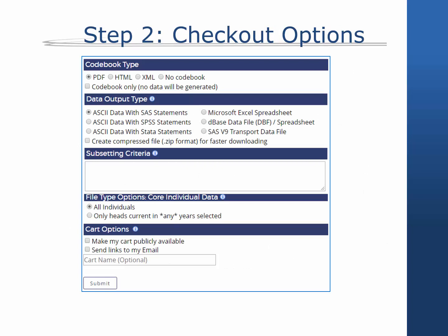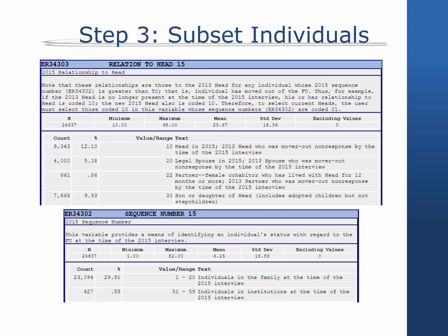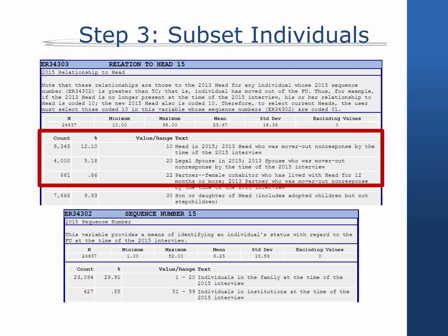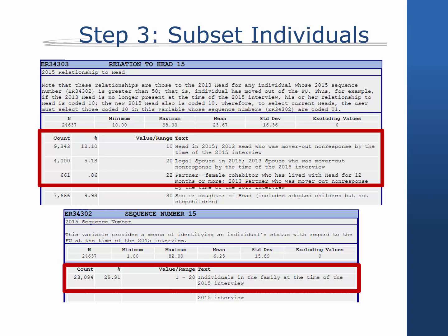Step 2: When you reach the data center checkout page, select the option All Individuals, which will create a file where each individual is an observation. Step 3: After you download your file, you need to subset to adults heading families — specifically individuals who are heads or reference persons and spouses or partners. To do this, the relationship to head or reference person variable must equal 10, 20, or 22 (head or reference person, spouse, and partner respectively), and the value of the sequence number must be in the range of 1 to 20, indicating that they were currently in the family unit in that wave.